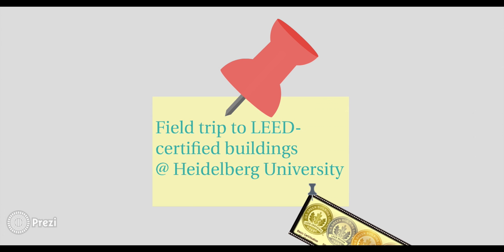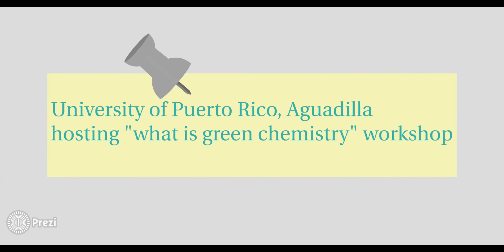And just to get your neurons firing, here are two more great examples. Heidelberg University students take annual tours of LEED certified buildings and make connections to how chemistry enables the development of green building materials. Last year at the University of Puerto Rico, Aguadilla, students organized a workshop called 'What is Green Chemistry' to help peers understand the differences between green chemistry and sustainability or environmental chemistry.